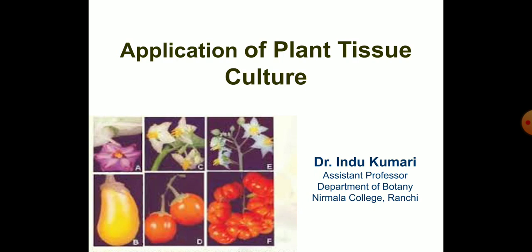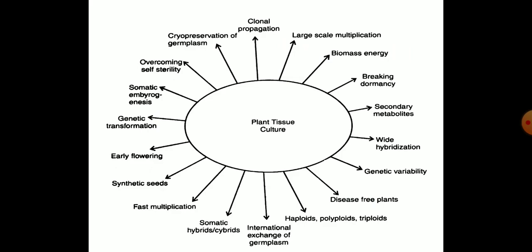In recent years, tissue cultures have become an important tool for crop improvement and commercial production of natural compounds. Tissue cultures are useful for several other reasons like large scale multiplication, biomass energy, production of secondary metabolites, disease free plants, haploid production, early flowering, genetic transformation, international exchange of germplasm, and cryopreservation of germplasm.